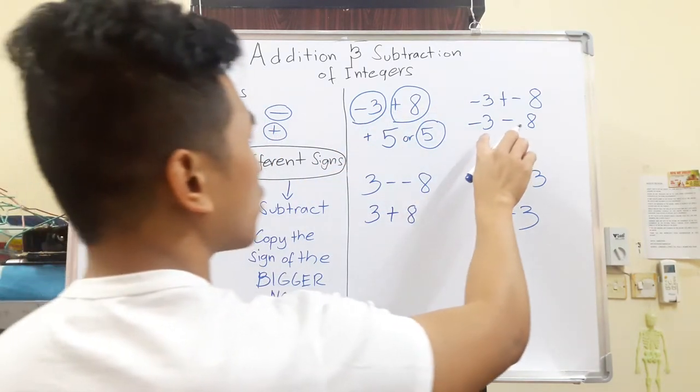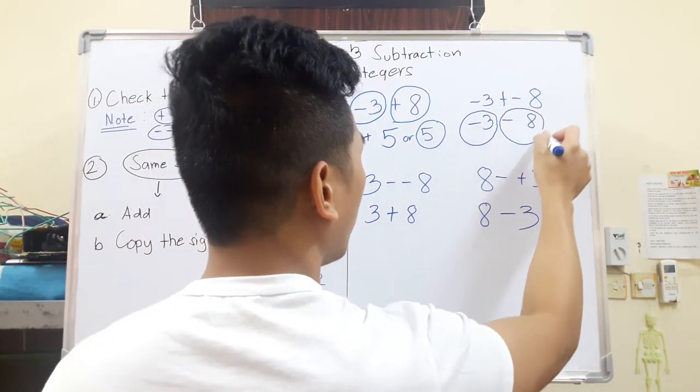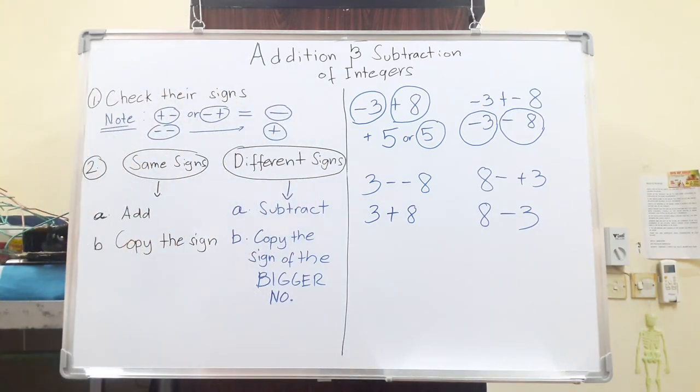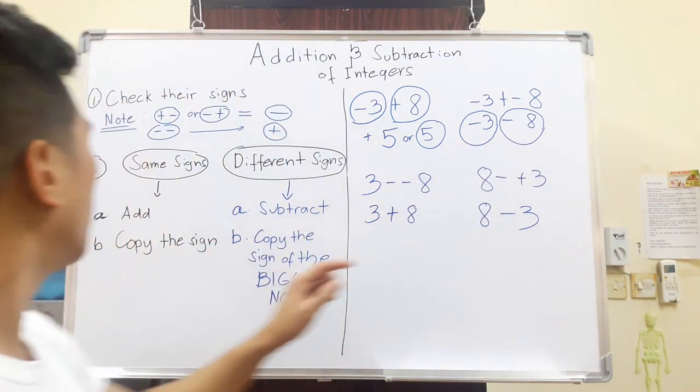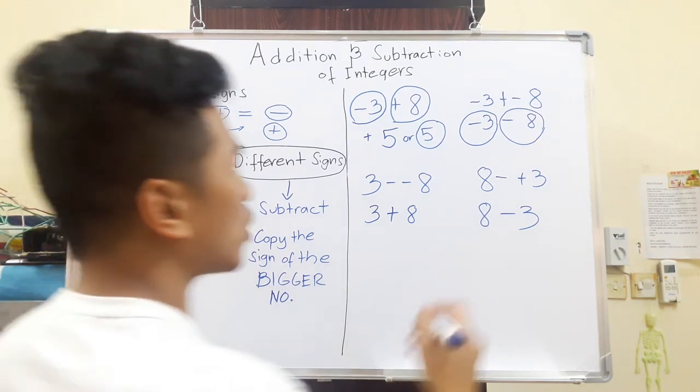Second question. Check the signs and the number. So we have -3, -8. We do have two numbers with the same sign. So it will follow this category. Number one, add. So add 3 and 8. 3 and 8 is just 11.